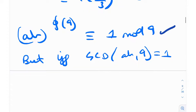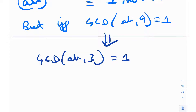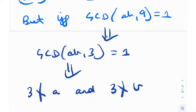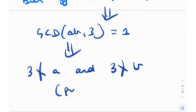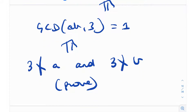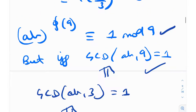For this to hold we need to prove gcd(ab, 9) = 1. That follows from gcd(ab, 3) = 1, which in turn follows from 3 ∤ a and 3 ∤ b. So if we can prove that 3 does not divide a and 3 does not divide b, it implies gcd(ab, 3) = 1, which implies gcd(ab, 9) = 1, and then the congruence (ab)⁶ ≡ 1 (mod 9) is valid.